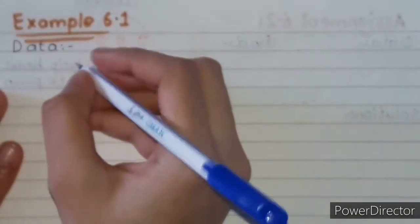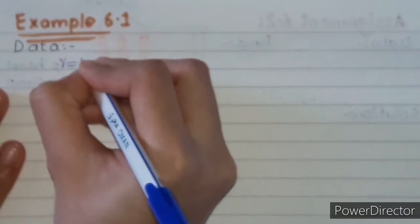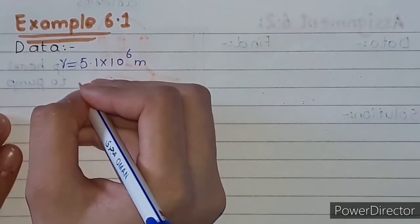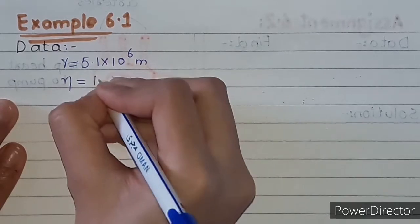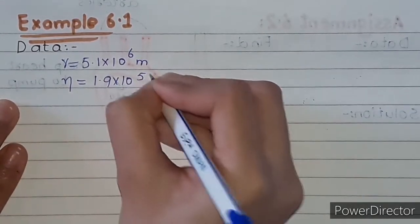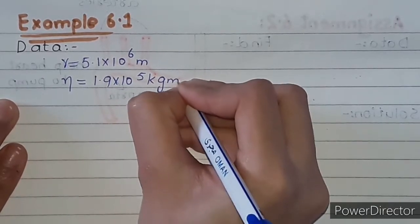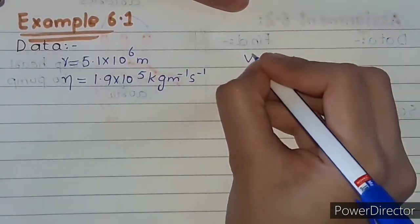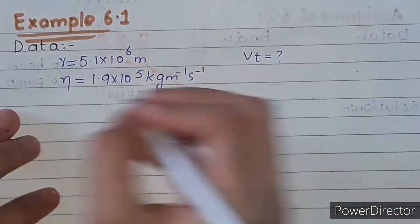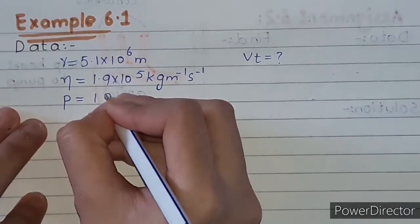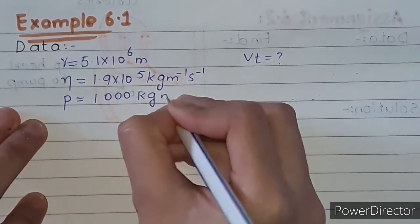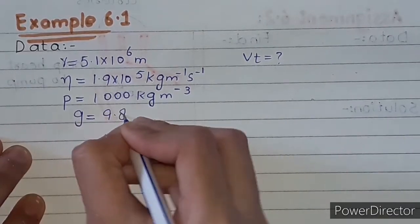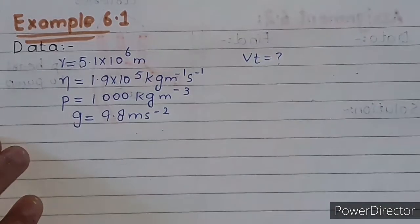We have radius given as 5.1×10⁻⁶ meter and the coefficient of viscosity η = 1.9×10⁻⁵ kg per meter per second. We need to find Vt, the terminal velocity. We know that ρ = 1000 kg per meter cubed and acceleration due to gravity g = 9.8 meter per second squared.